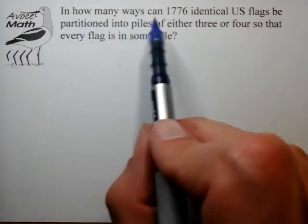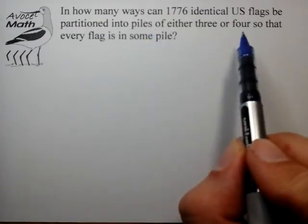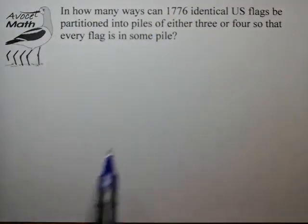In how many ways can 1776 identical flags be partitioned into piles of either 3 or 4 so that every flag is in some pile? Now on first reading this appears to be a combinatorics problem, and it's only until you get a little further that you realize it's actually a disguised linear two-variable Diophantine problem.